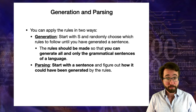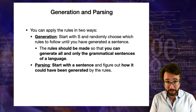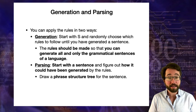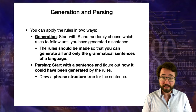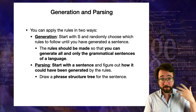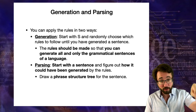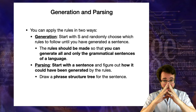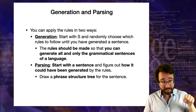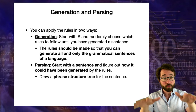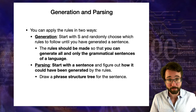Parsing is the opposite of generation. Parsing is when you start with a sentence, a list of words, and you figure out how that sentence could have been generated by following the rules — in other words, you're drawing a syntactic tree, a phrase structure tree for the sentence. You can think of these syntactic rules like a machine you can run forward or in reverse. Running it forward is generation; turning the crank backwards is parsing.